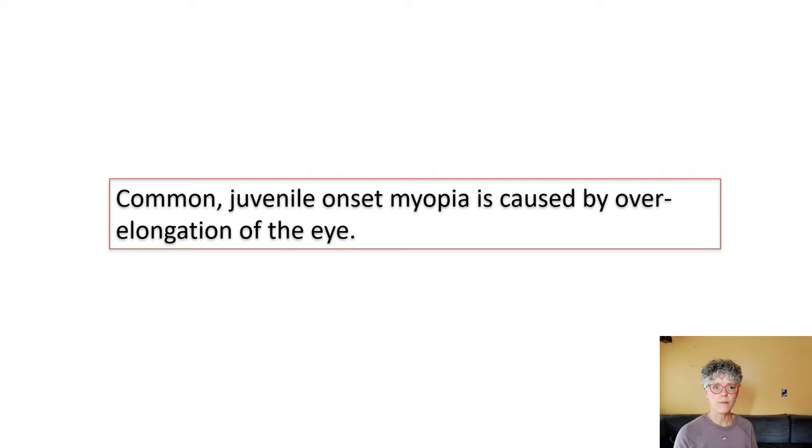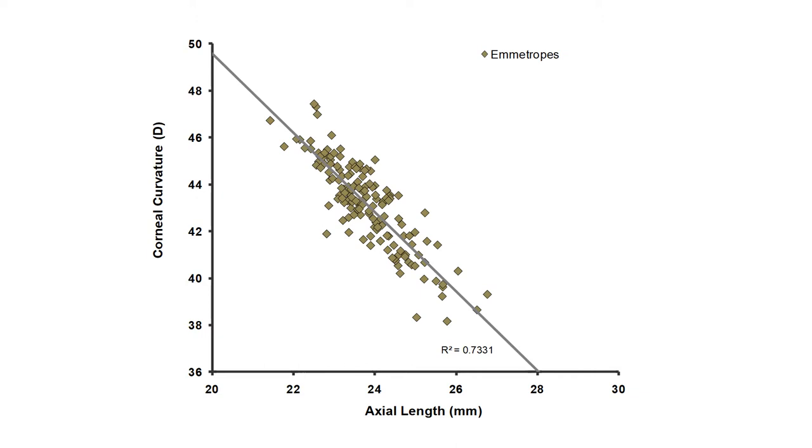Common juvenile onset myopia is caused by over elongation of the eye. How that works is illustrated here. Each data point is a measurement of the corneal curvature on the y-axis versus axial length on the x-axis for adult emmetropes. So these are people who have no refractive error. There's tremendous variability in the optical power of the eye and this is mostly due to differences in corneal curvature as you see from the spread on the y-axis. Eyes with more curved corneas have shorter focal lengths and eyes with flatter corneas have longer focal lengths.